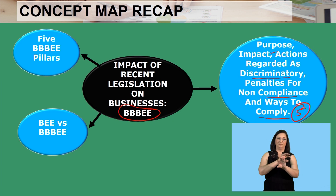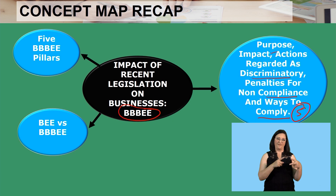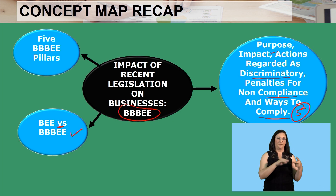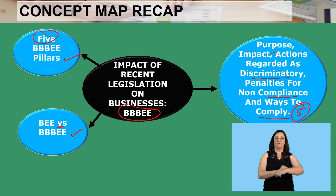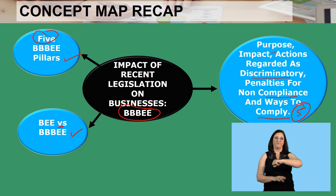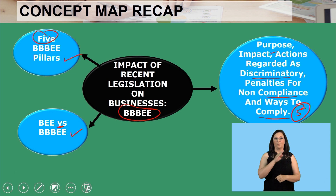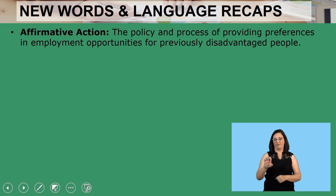Afterwards we looked at our special aspects under this topic. We've got two special aspects: we looked at BEE versus Triple BEE, and we looked at the five Triple BEE pillars. So this is everything that we've covered in this topic.